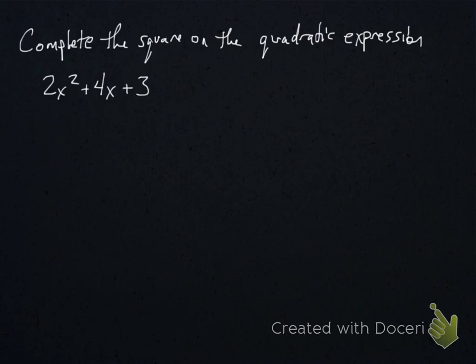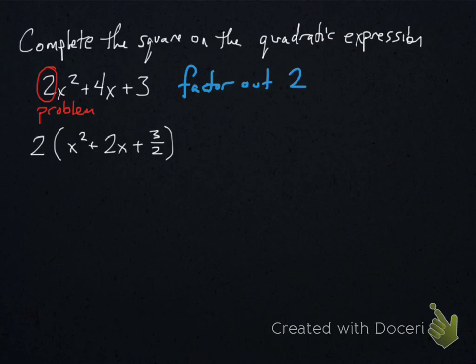Finally, we will learn how to complete the square if the x squared term has a coefficient other than 1. In this example, we must factor out 2 from all the coefficients before completing the square. Now we're able to perform the process outlined on the previous slide.